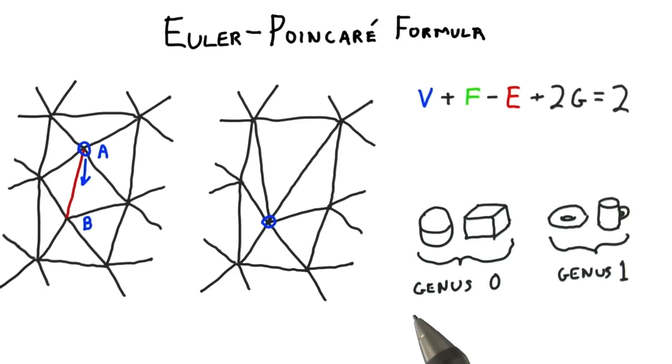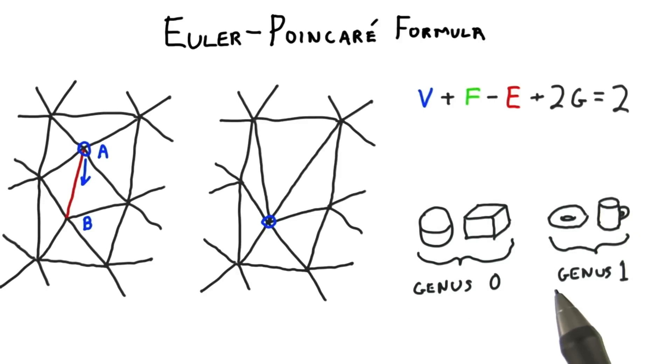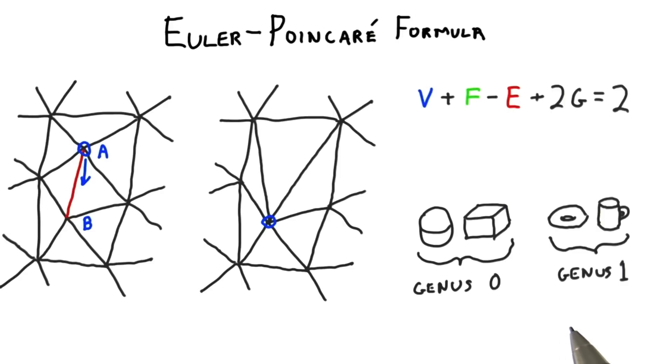As an example, a sphere and a cube have genus 0. A donut and a coffee cup with a handle have genus 1. There's an old joke about topologists not being able to tell their coffee cup from their donut.